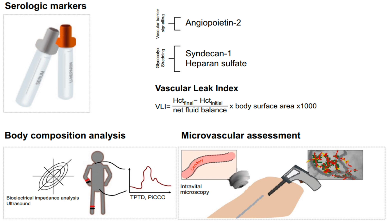The vascular leak index, or VLI, helps assess the degree of vascular leak by comparing changes in hematocrit levels and fluid balance over time; a higher VLI indicates more severe vascular leakage. Body composition analysis techniques include bioelectrical impedance analysis, which measures body water content and helps evaluate fluid distribution between intracellular and extracellular compartments, as well as transpulmonary thermodilution and PICCO for advanced hemodynamic monitoring to assess cardiac output and fluid balance.